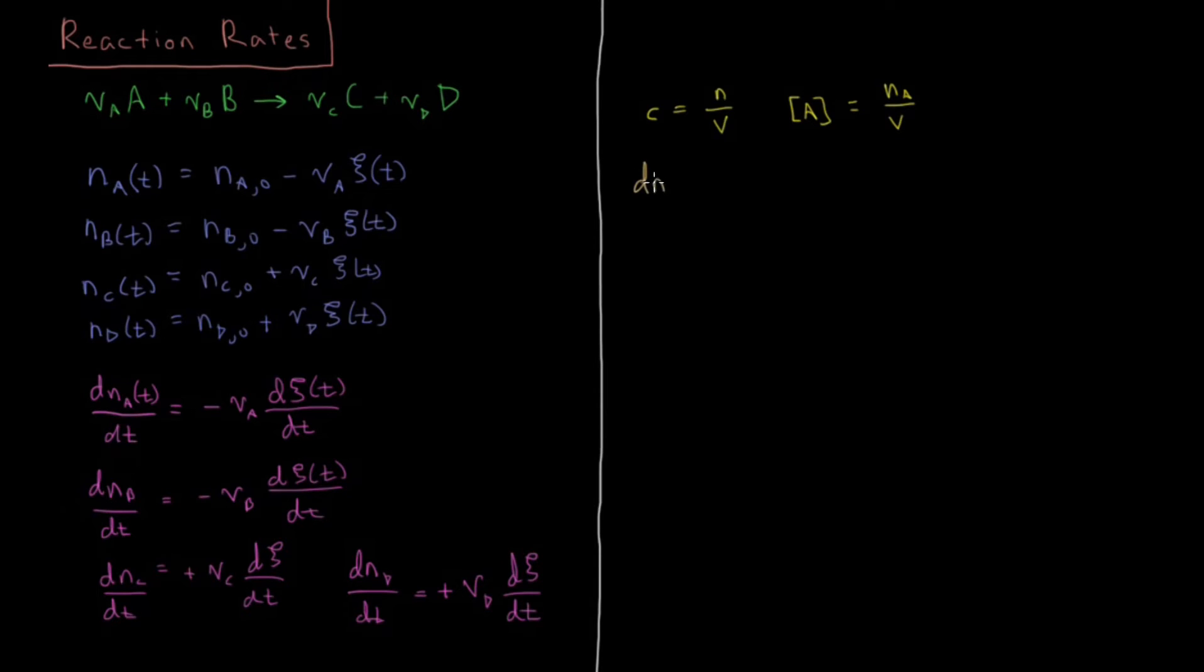So if we have d[A]/dt, that is the change of the molarity of A over time. And that is going to be equal to, it's just this value divided by V. So it's minus nu A over V, dC/dt.